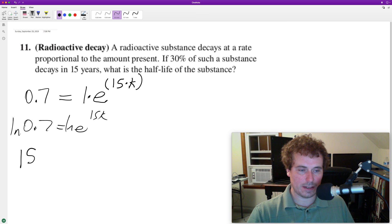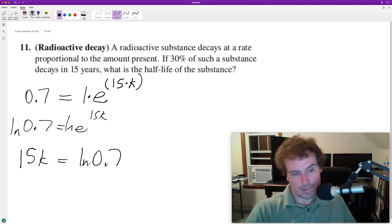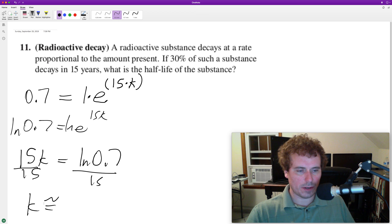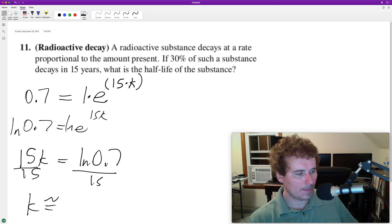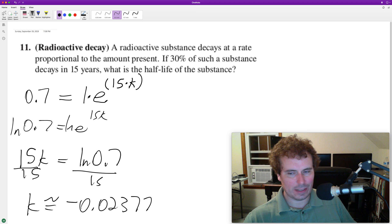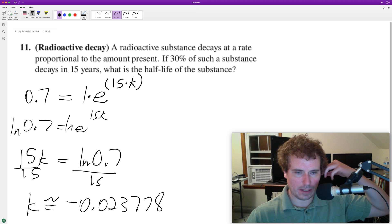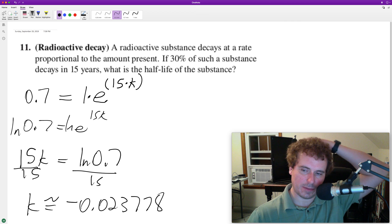We end up with 15k is equal to natural log of 0.7. Divide through by 15 and we get k is equal to approximately negative 0.023778. I'm just writing those out a lot so we have approximately the constant.